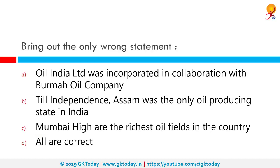Bring out the only wrong statement. All of these statements are correct. Oil India Limited was incorporated in collaboration with Burma Oil Limited by the President of India. They commissioned a gas-based power plant in Duliajan in Assam, which was pre-independence. Oil was discovered at Digboi in 1882 during construction of the Tinsukia-Lido Railway. Bombay High, now Mumbai High, is an offshore oil field in the Arabian Sea and is the richest oil field in the country.